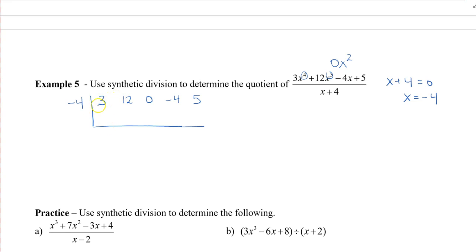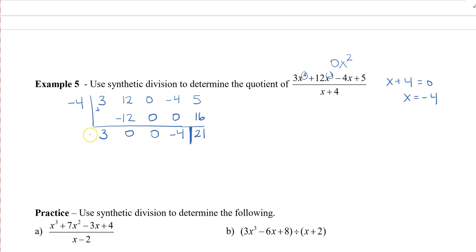We bring down the first number, 3. Multiply: negative 4 times 3 is negative 12, placed under the next number; adding gives 0. Negative 4 times 0 is 0; we add and get 0. Negative 4 times 0 gives 0; we add and get negative 4. Multiply negative 4 by negative 4 to get 16; we add and get 21. Some books draw a line to separate the remainder from the quotient.